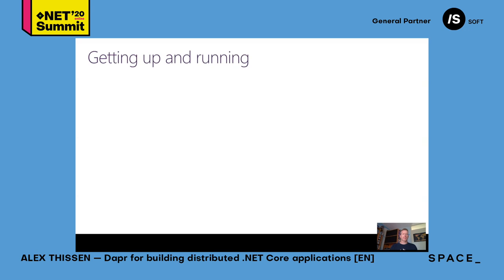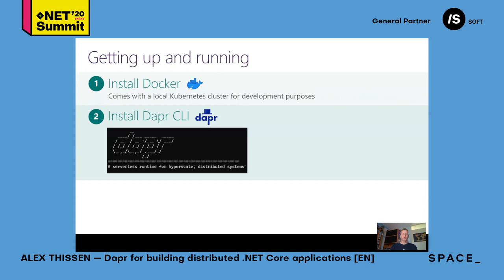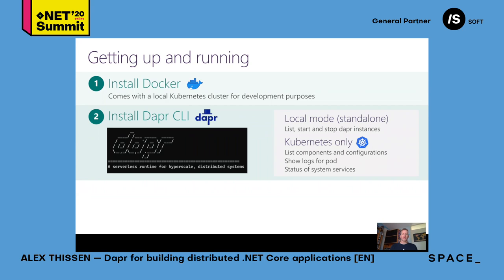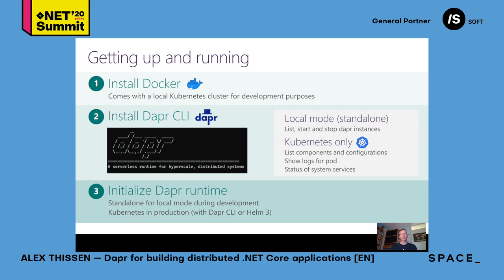To get up and running on your local development machine, you will install Docker Desktop, which also gives you a local Kubernetes cluster to run your application as it would run in production. You will also install the DAPR command line interface, which has a rich interface to interact with everything from the runtime. Locally you can start and stop DAPR instances in standalone mode without any cluster, and for Kubernetes you can see and interact with the cluster and all DAPR components. After installing the DAPR CLI, you initialize the DAPR runtime — locally Docker Desktop will have containers running providing base services such as placement and state storage, or you can use the CLI or Helm charts for Kubernetes.